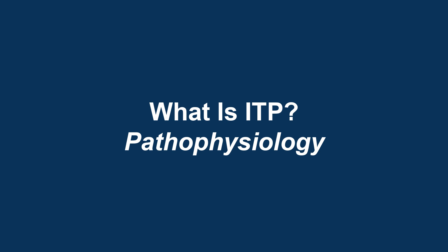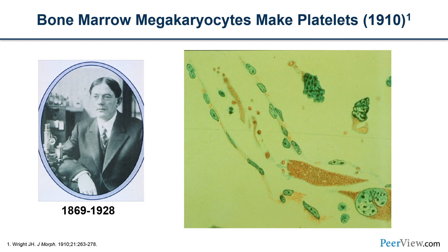Why do we have ITP in the first place? My predecessor at our hospital, James Homer Wright, who invented the Wright stain, was first to show that platelets came from a bone marrow cell called the megakaryocyte. In ITP, antibodies pick off and destroy platelets. But antibodies and T cells also affect megakaryocyte growth and suppress them. So ITP is a problem of platelet destruction, but also inhibition of platelet production.